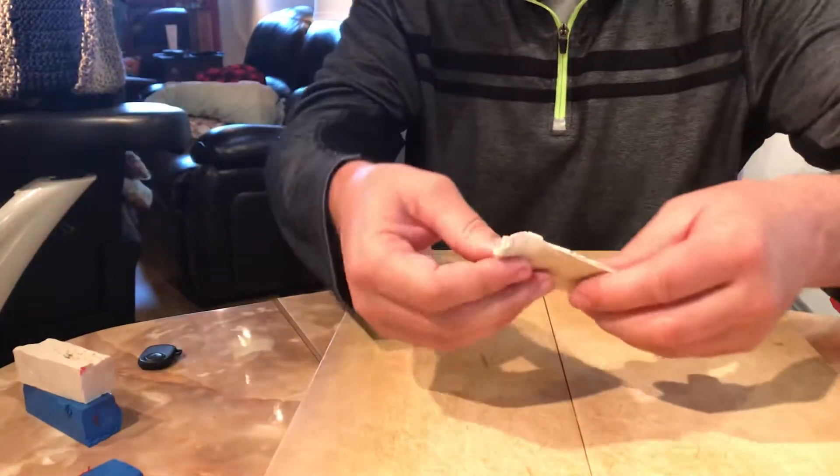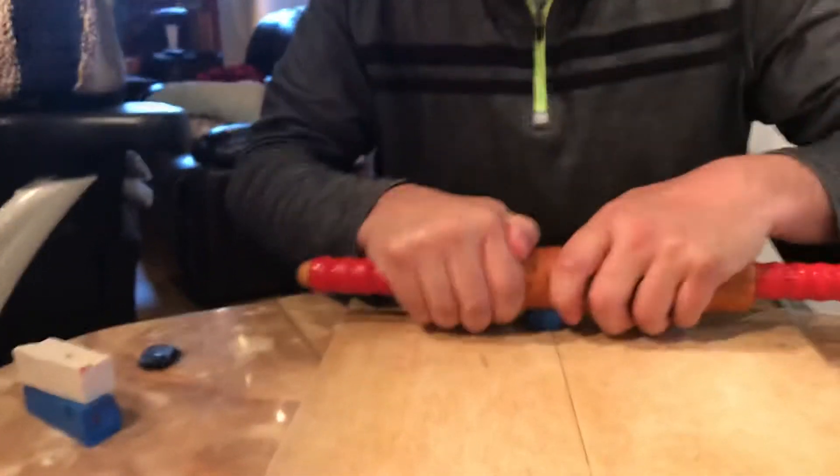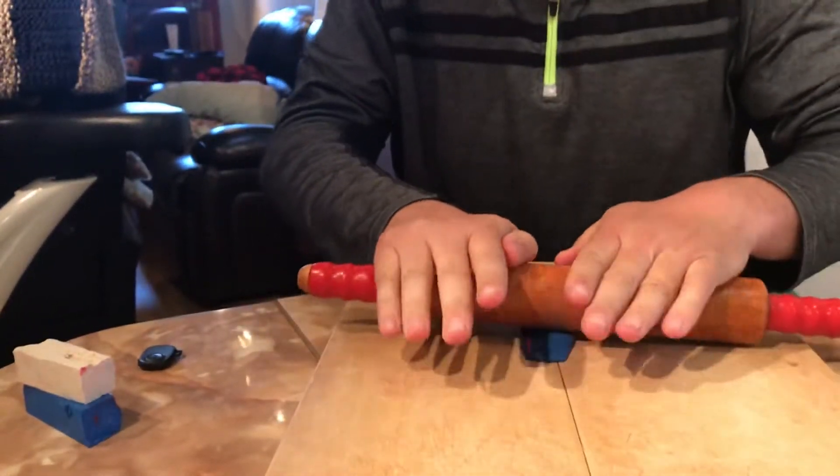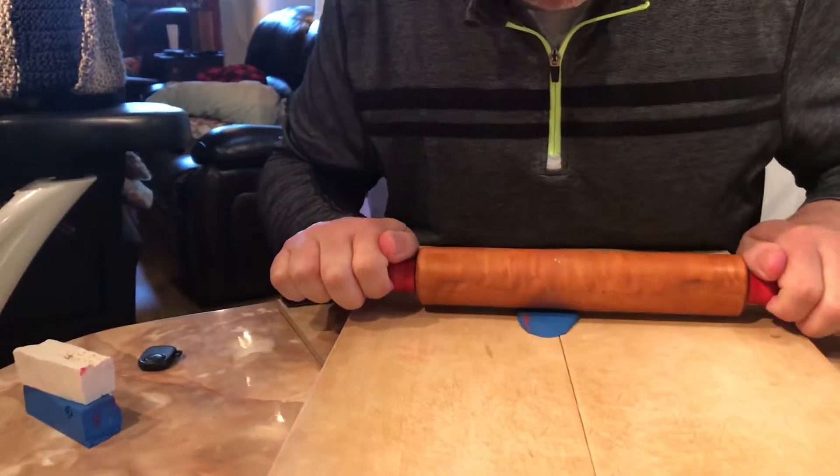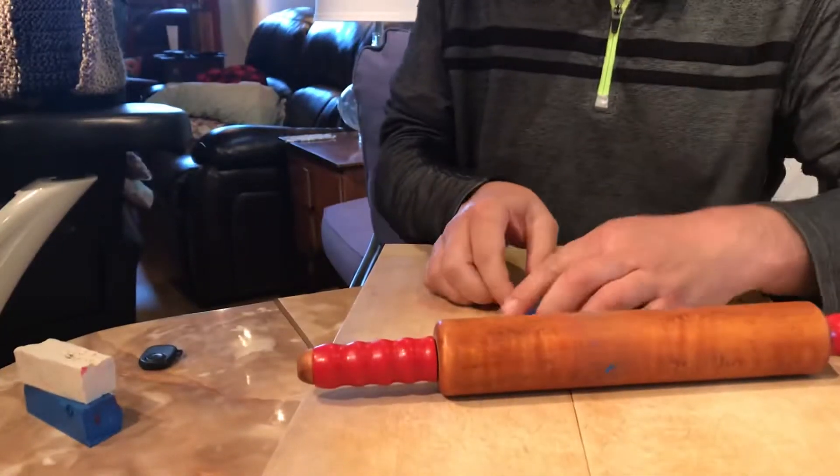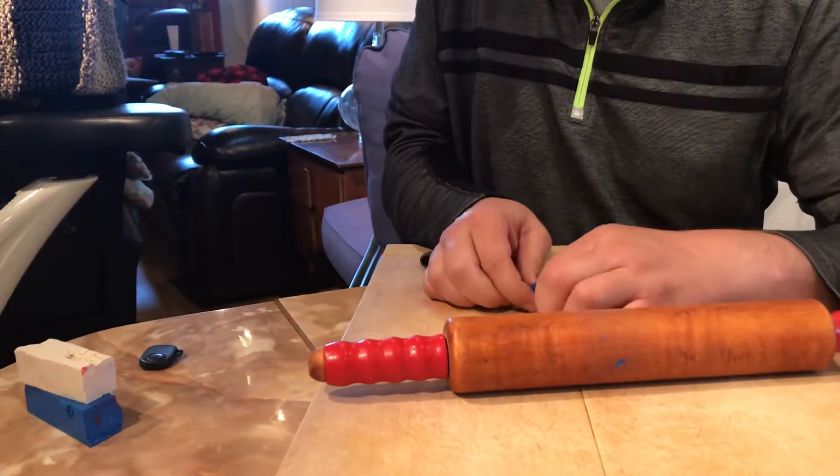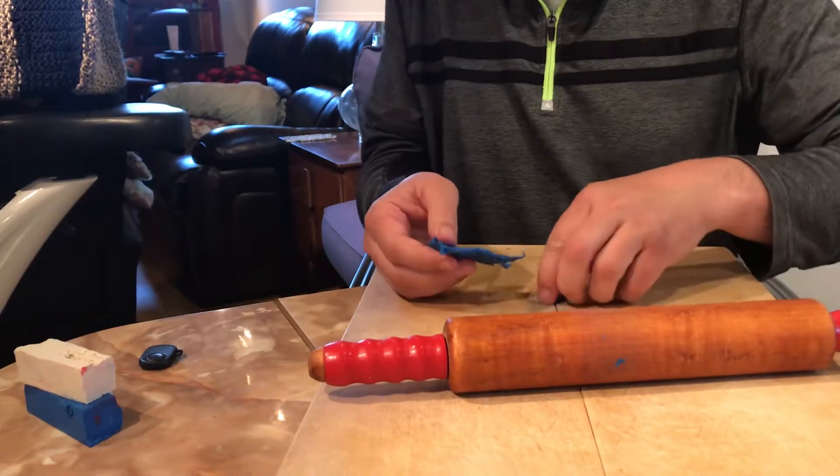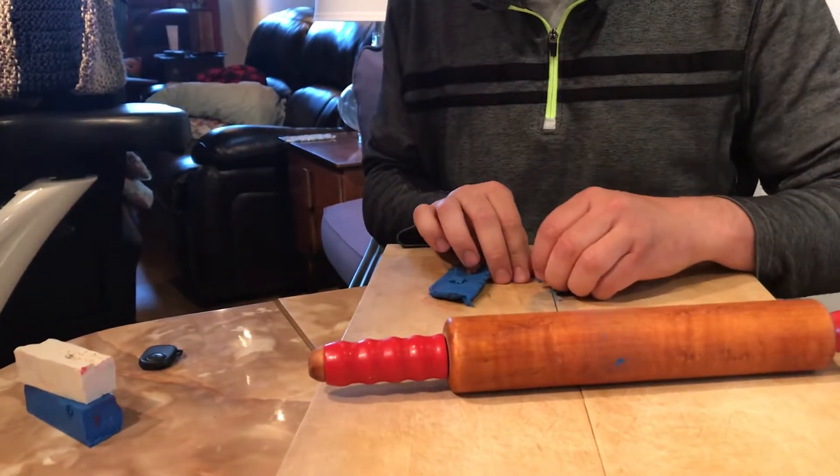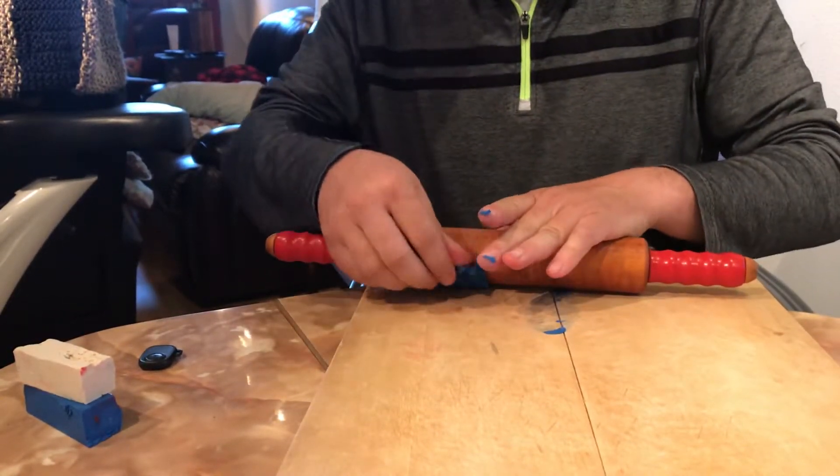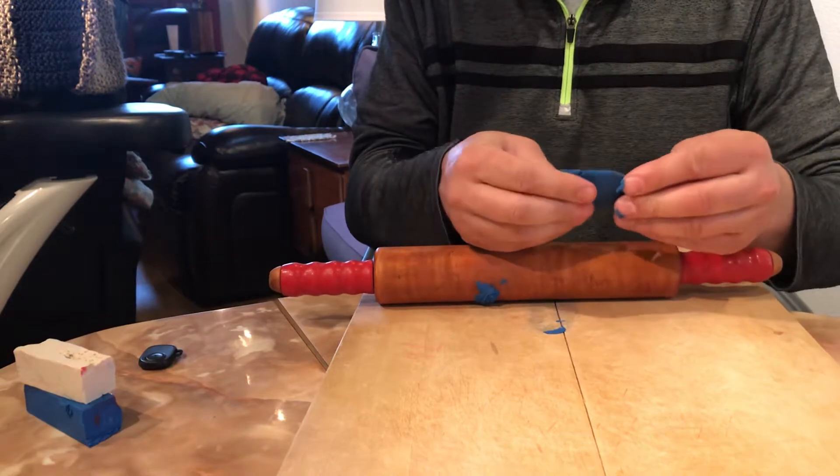Now we'll do the blue. Get the blue and get it smashed out too. It's pretty stiff stuff. This one's got a tiny bit of red mixed in it but that's okay. We're gonna get the blue flattened out. Hopefully get it off of the cutting board here. It's really kind of hard sticky stuff.